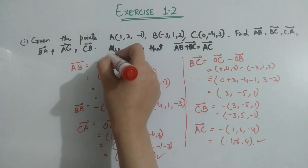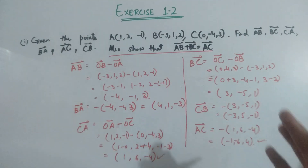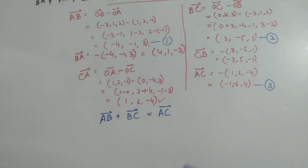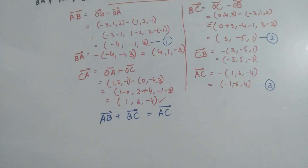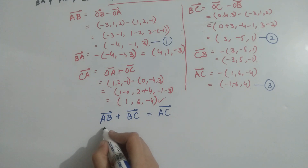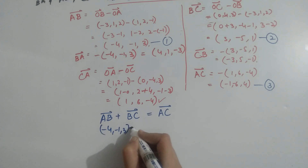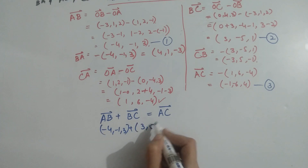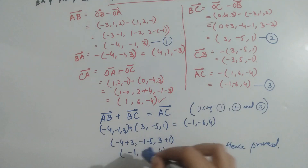The second portion of this question is to prove that AB plus BC equals AC. Just put the values: AB is (minus 1, minus 4, 1) as calculated, and BC is (3, minus 5, 1). Adding them together using the components, you will get the result equal to AC. This is proved.